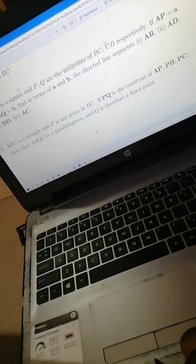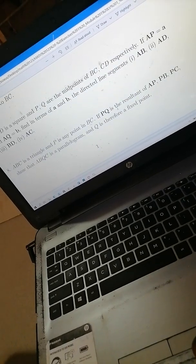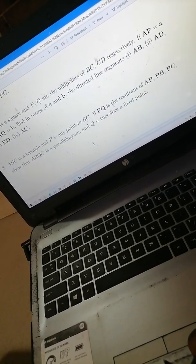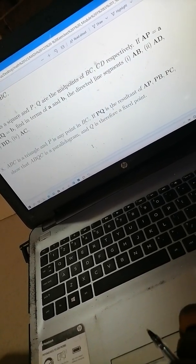Okay, good afternoon. Today I'm going to assist you guys in solving question number eight. The question says that ABC is a triangle, P is any point on BC, so P is a point on the line BC.